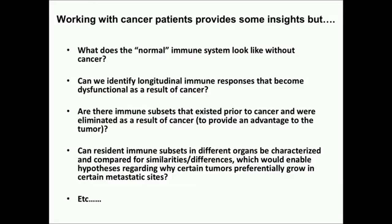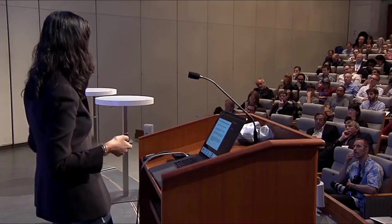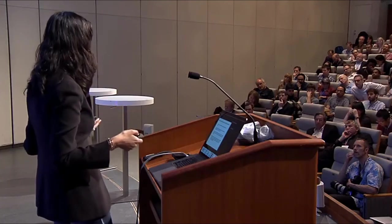Can resident immune subsets in different organs be characterized and compared for similarities and differences? This would enable hypotheses for why certain tumors preferentially grow in certain metastatic sites. Prostate cancer always goes to bone — that's its favorite site for metastases — and no one understands why, compared to melanoma, which rarely goes to bone. These are things that are still immunologically driven, but we don't have enough understanding of what that immune response looks like even before cancer develops. The Human Cell Atlas allows us to start to develop that data.